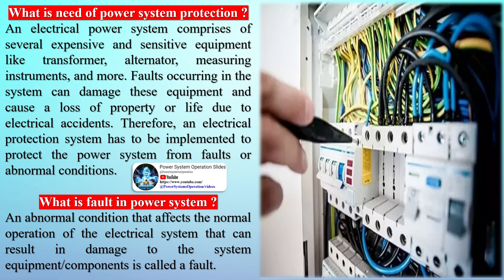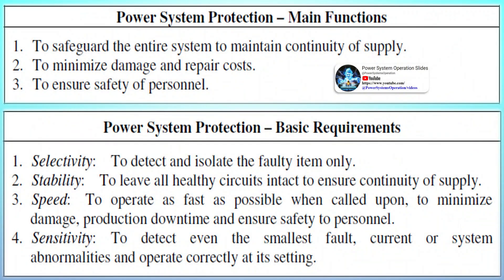Important terms related to power system protection: A relay is an electromagnetic, electromechanical, or electronic device that can automatically operate using a power signal to perform the switching of a high power signal. A protective relay is a type of relay that can automatically operate in case of any fault or abnormal condition that occurs in the electrical system, and is generally used to sense the abnormality and trip the circuit breaker to isolate the faulty section from the healthy section.